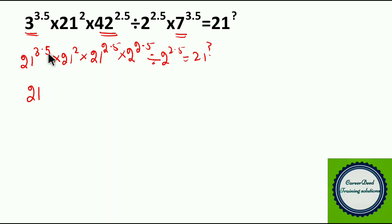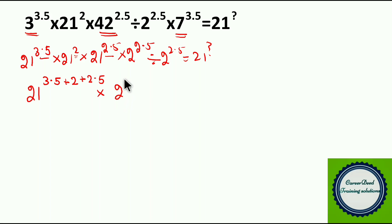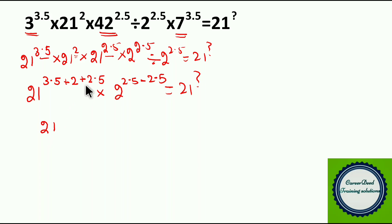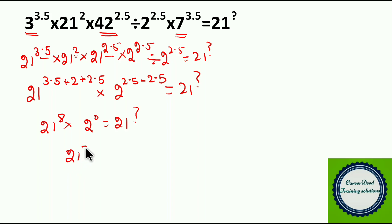Using a power m into b power m equals ab to the whole power m, we write 21 power 3.5. Into 21 power 2.5, and 42 power 2.5 can be written as 21 power 2.5 into 2 power 2.5. So 21 power 3.5 plus 2.5 gives 6, and adding the 2 from question 2 gives 21 power (3.5 plus 2 plus 2.5). Now with the division by 2 power 2.5, using a power m divided by a power n equals a power m minus n, the exponent becomes minus 2.5. So 21 power 8 into 2 power 0 equals 21 power question mark. Since a power 0 equals 1, the answer is 21 power 8, so the question mark equals 8.